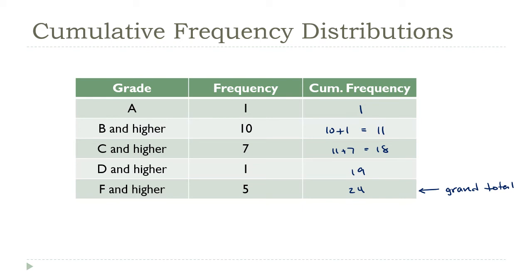This kind of distribution lets us see the trend in the data. For example, looking at this I can tell that I had 11 high scores and 18 students with passing grades.